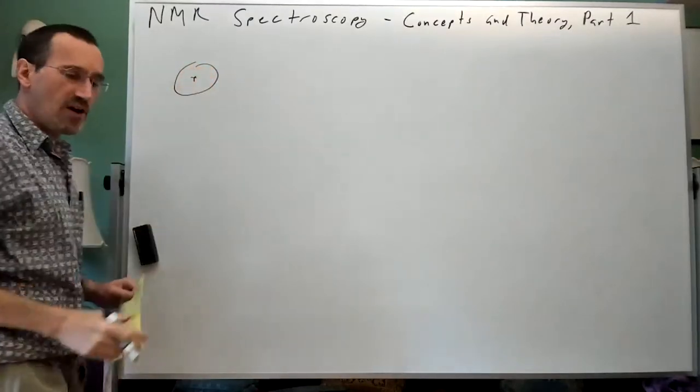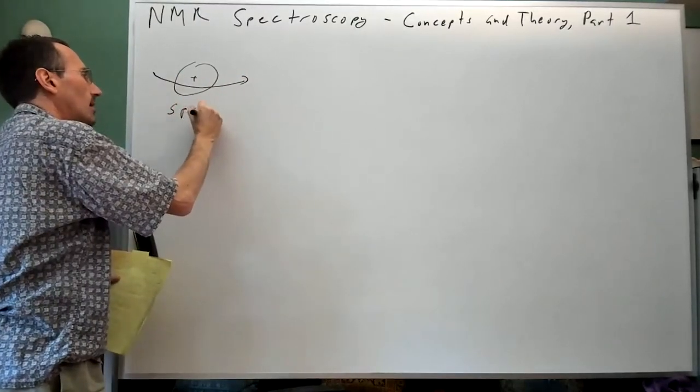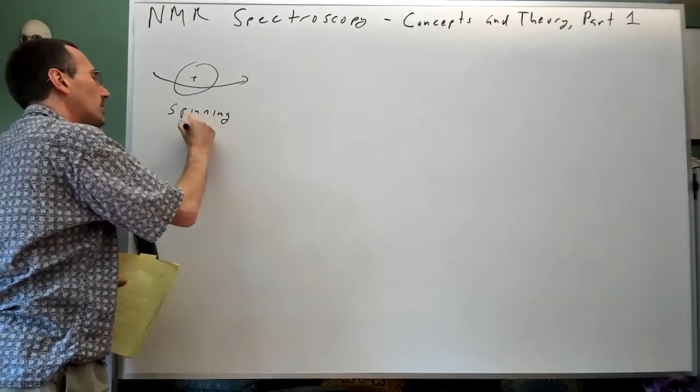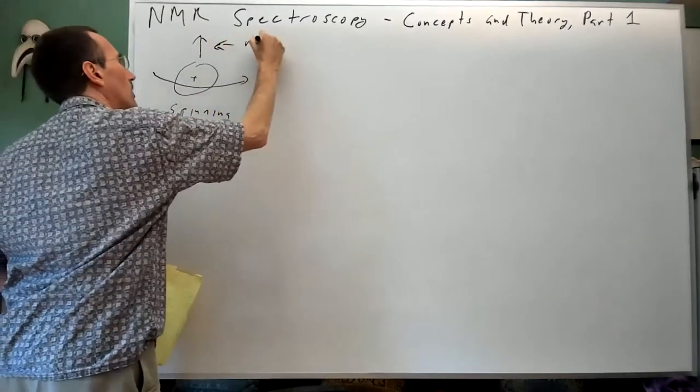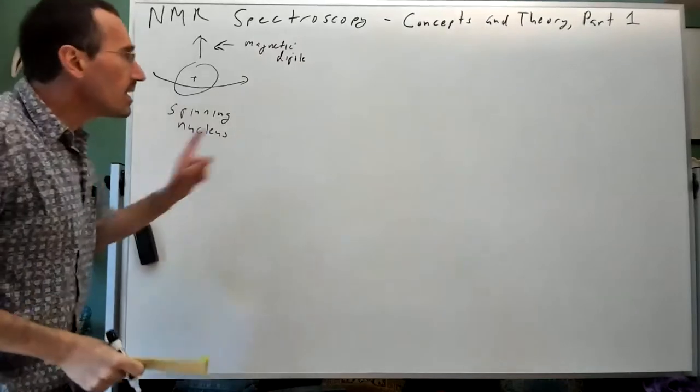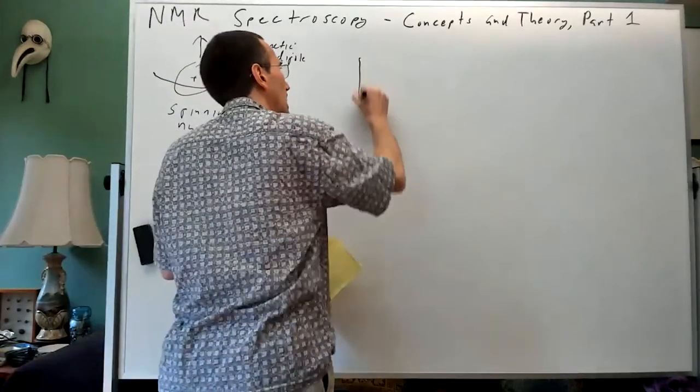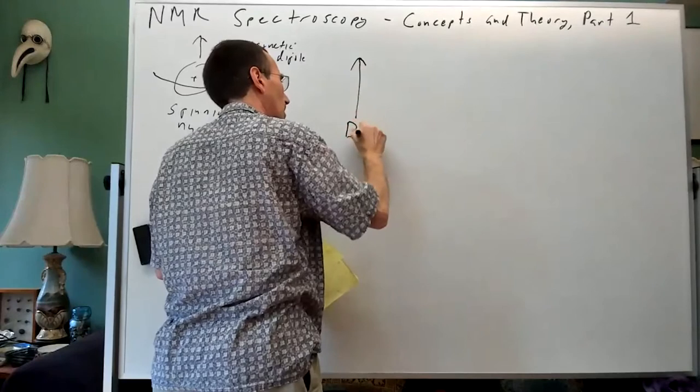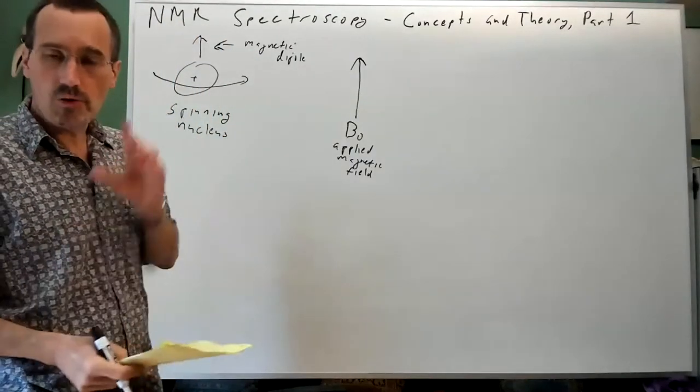If you envision this as a spinning nucleus, you get a magnetic dipole as a result of that. Now, if we imagine applying an external magnetic field, and we'll call that B-naught, that's going to get the nuclear spins to align.